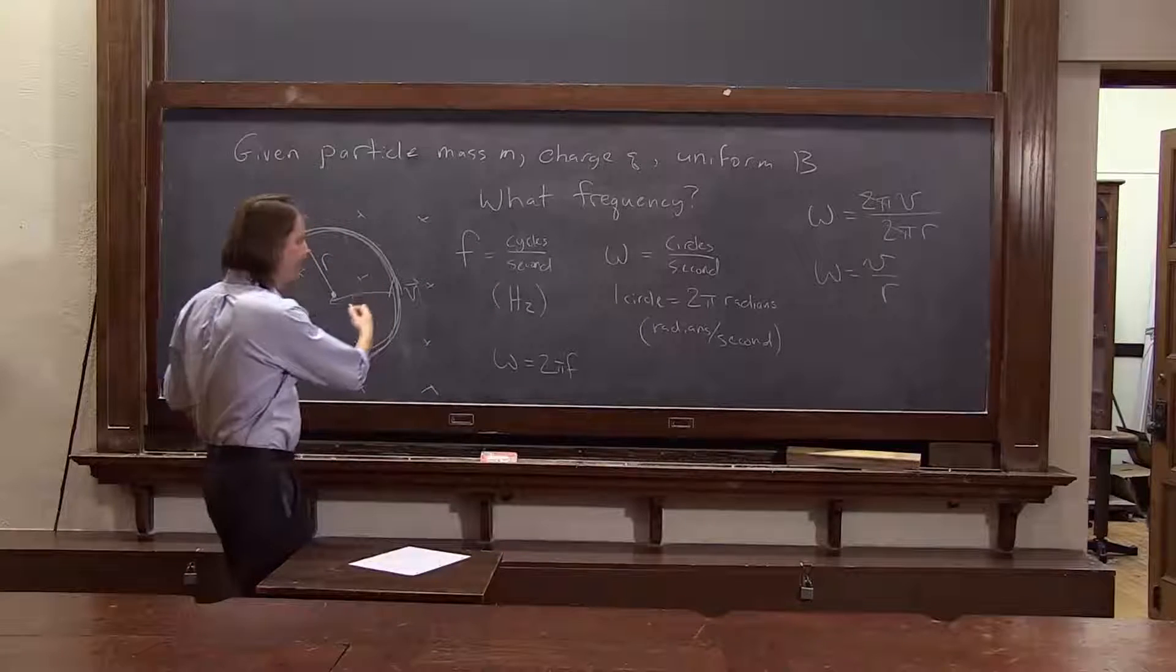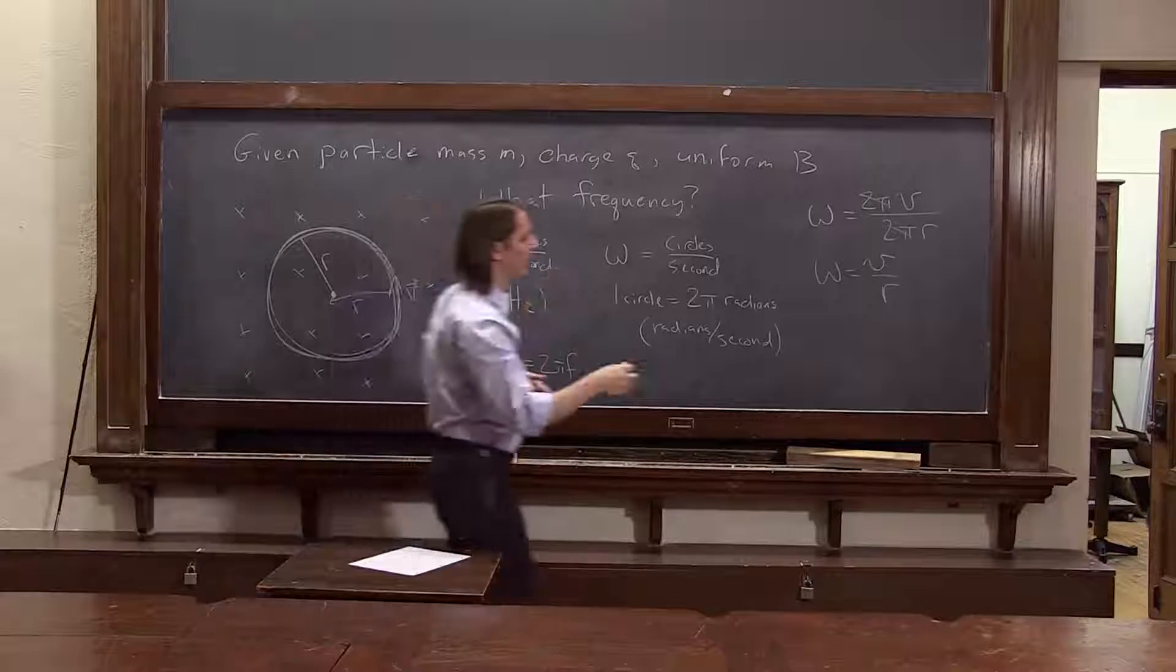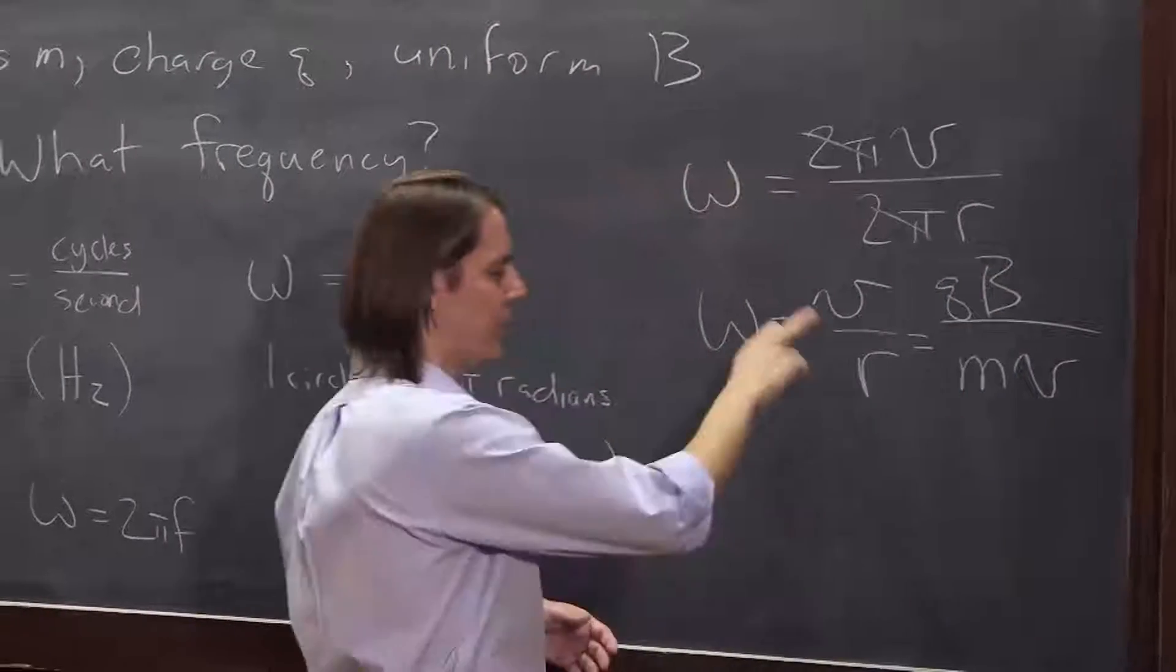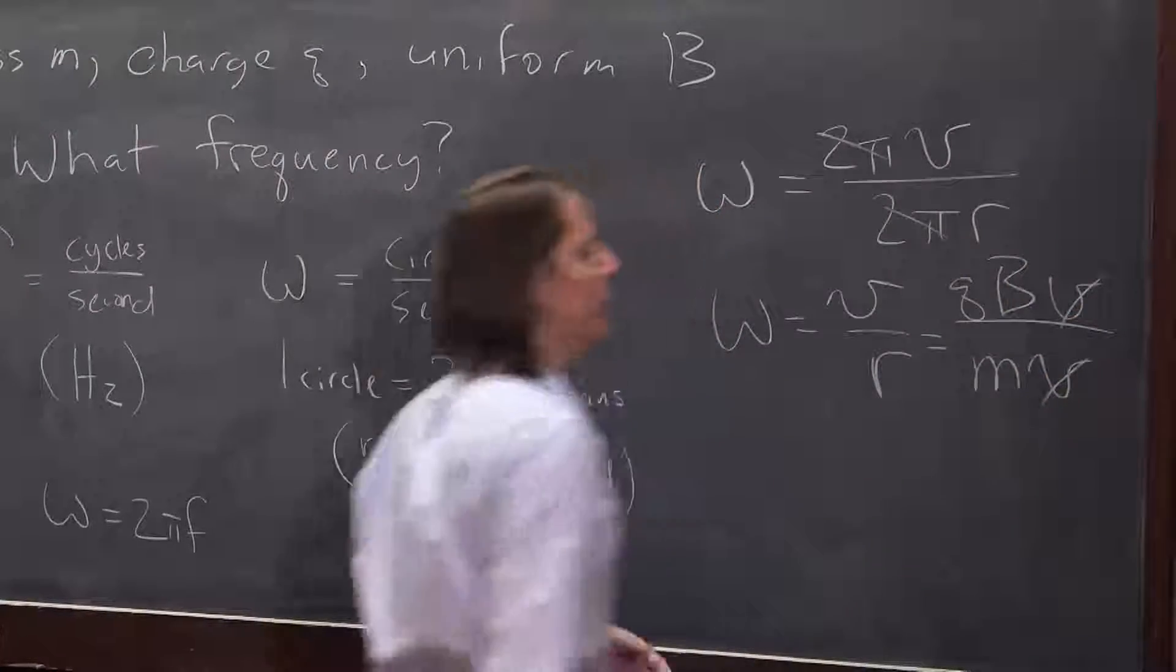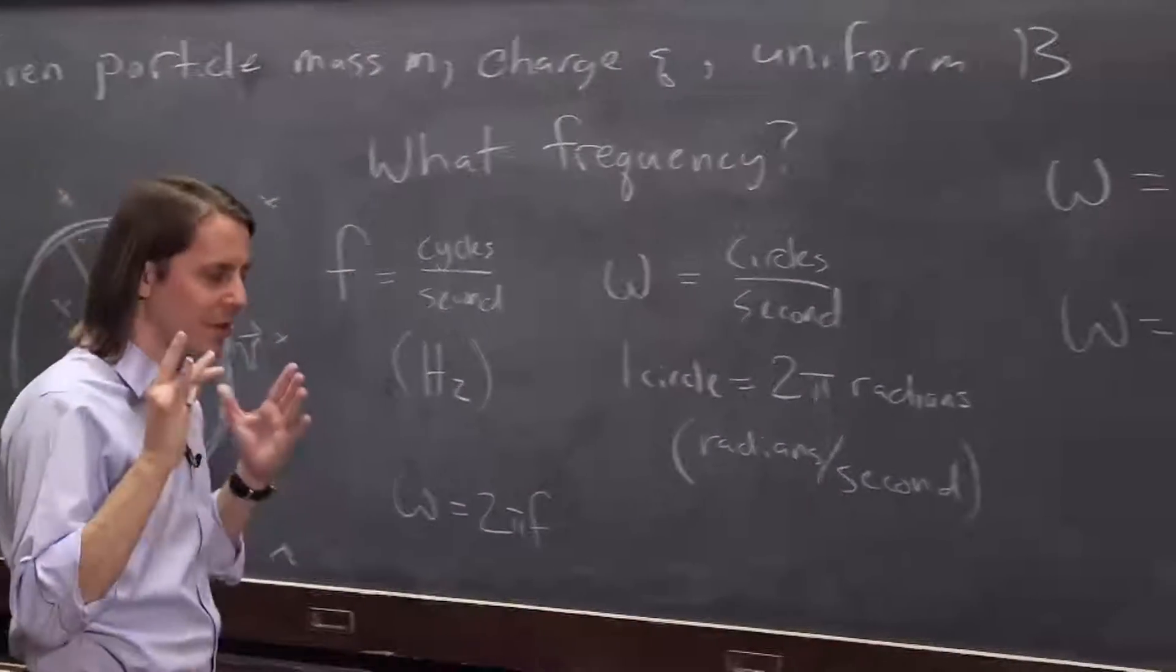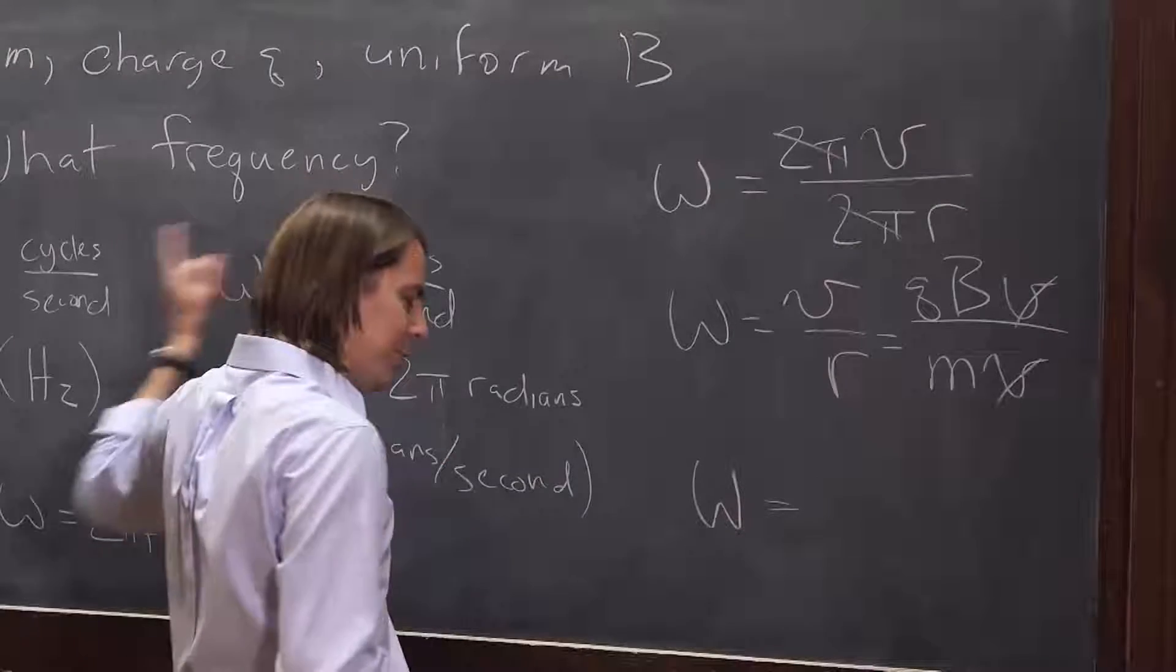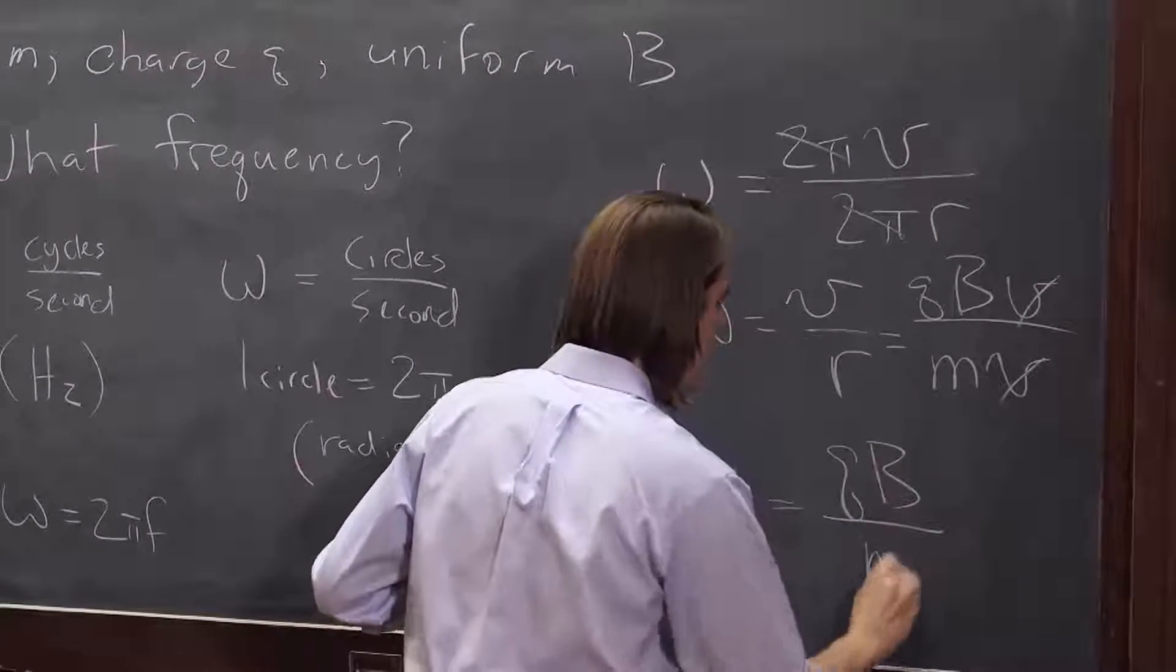So now we can say for this case, we plug in for r. We already solved for r in terms of all these variables. Remember, it was mv over qb, so it's in the bottom, so I wrote mv on the bottom, qb on the top, and that v is still there. But then we'll let those go away. So the omega we want, finally, the angular frequency of this thing, of the particle going around the magnetic field, is qb over m.